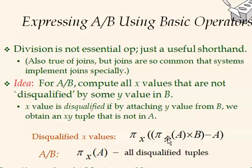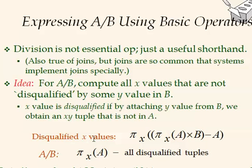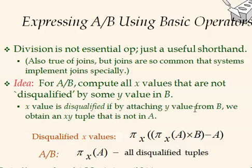After forming all (X, Y) combinations, we subtract the actual tuples in A to find the X values that do not cover all Y values in B — these are the disqualified X values. We project A onto X and subtract the disqualified values to get the final answer, which is equivalent to A divided by B. Since this type of query is frequent, the division operator serves as a useful shortcut.